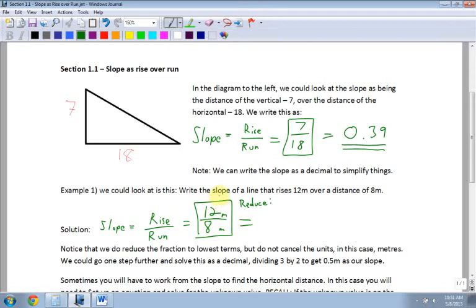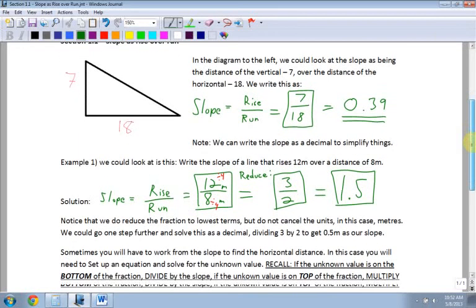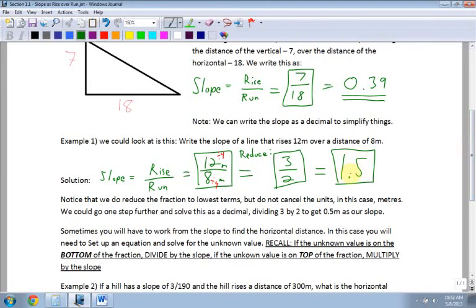So when you're reducing, keep in mind what you can divide by. Well, I can divide the top by 4, and I can divide the bottom by 4. So when I divide those, I get 3 over 2. So that's a simplified slope. It rises 3 meters for every run of 2 meters. And again, you could reduce this to a decimal, which would be 1.5. Either one of these is acceptable. I prefer fractions, but if you're going to be using them in terms of the math and calculating, it's a good idea to sometimes convert it to a decimal.